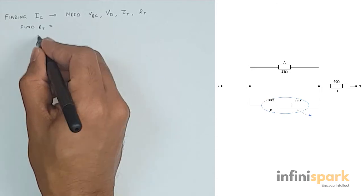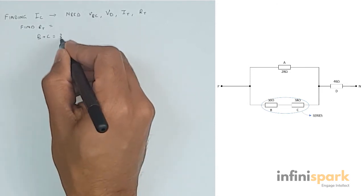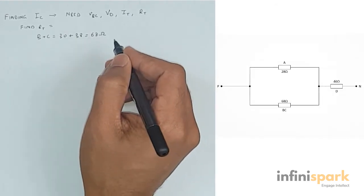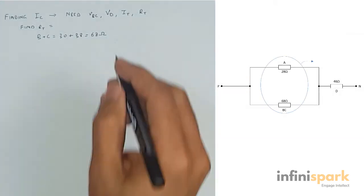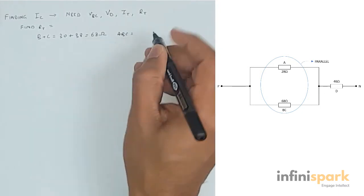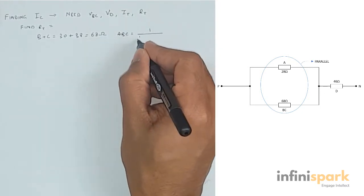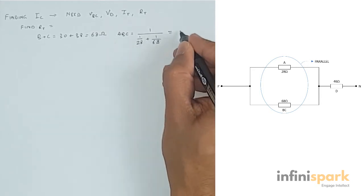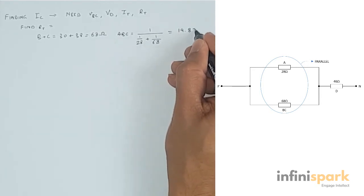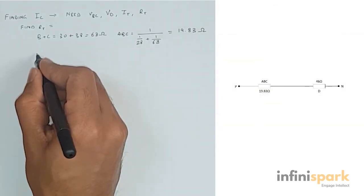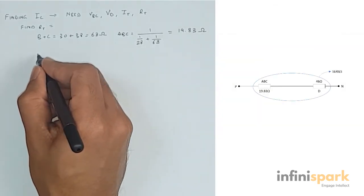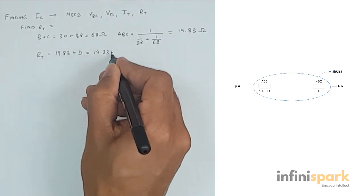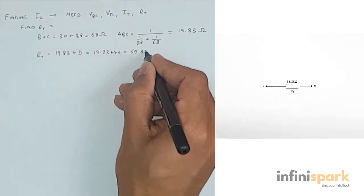In this circuit we can tell that B and C are in series, so let's find that first. B plus C gives us 68 ohms. We can now see that BC is in parallel with A, so ABC is equal to 1 divided by (1 divided by 28 plus 1 divided by 68), which gives us 19.83 ohms. And finally this 19.83 is in series with D, so our total resistance RT is 19.83 plus 46 which is 65.83 ohms.